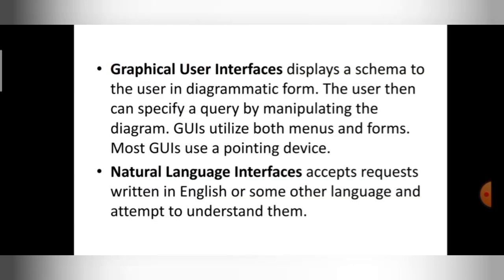Next is the graphical user interface, or GUI. GUIs are a combination of both menus and forms. In a GUI, menus and forms are both present, along with text boxes, radio buttons, and different graphical components. GUIs utilize both menus and forms, and most GUIs use a pointing device such as a mouse to interact with the interface.